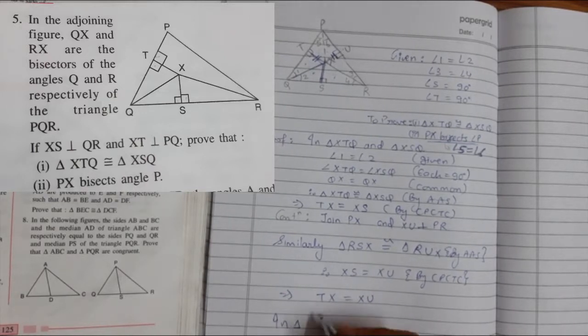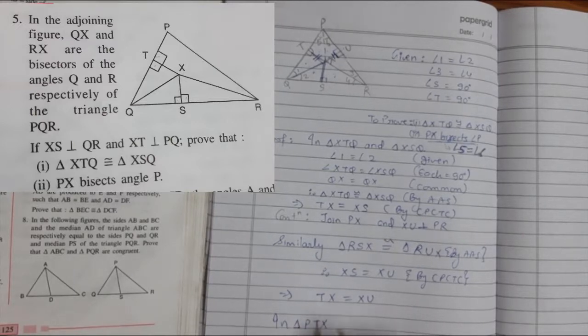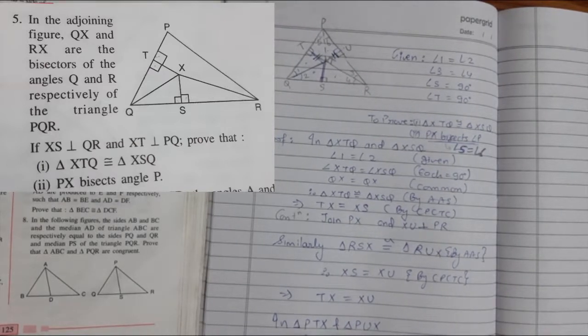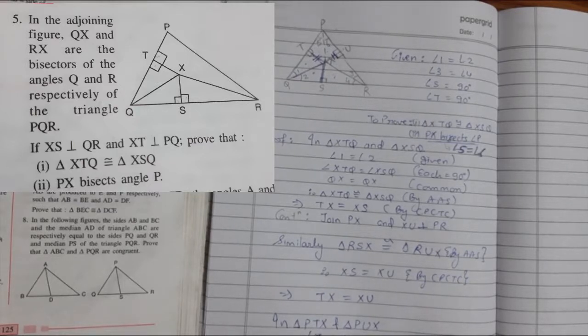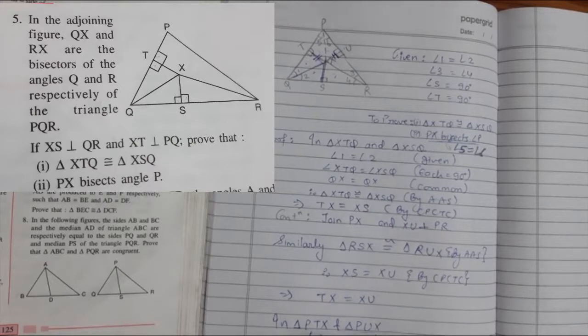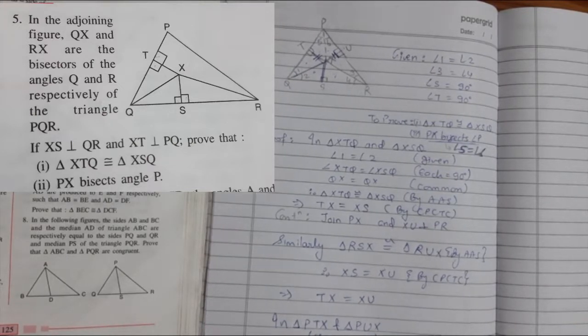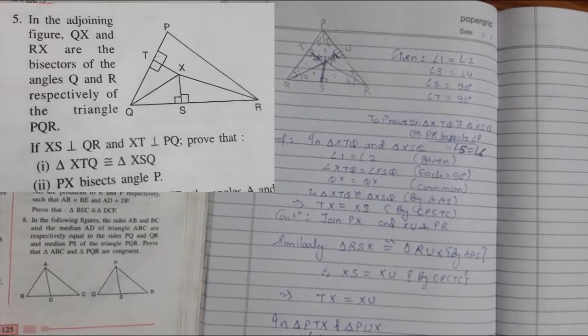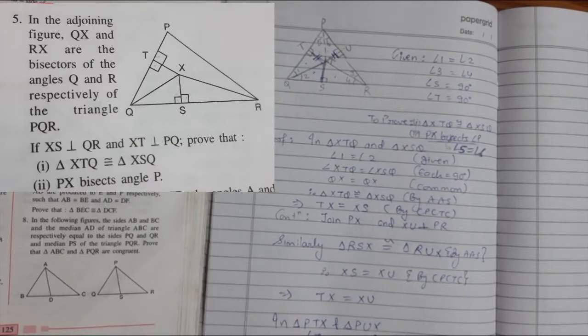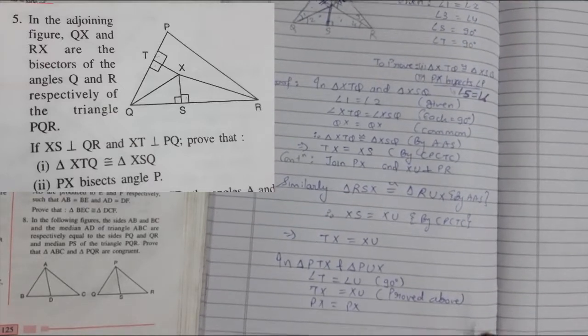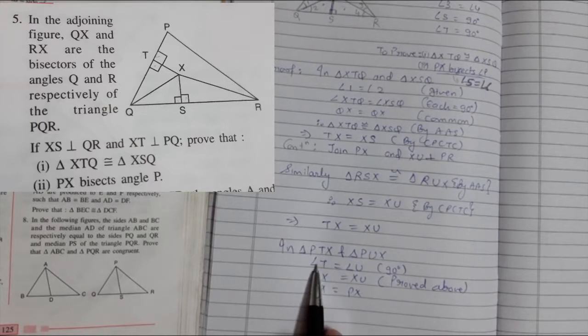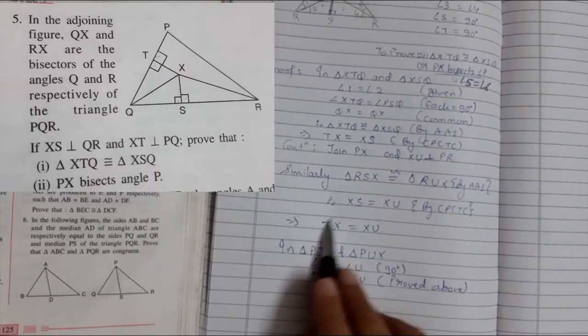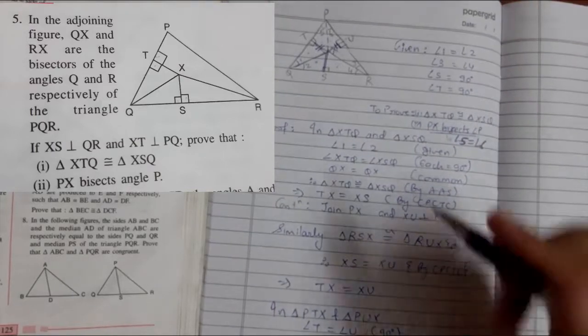Let's take the triangle. In triangle PTX and triangle PUX. First thing is angle T equals to angle U, 90 degrees. Second thing is TX equals to XU, proved above. And third thing is PX equals to PX, which is common.